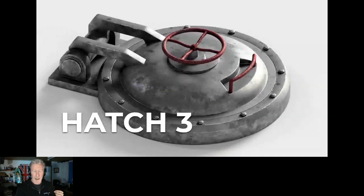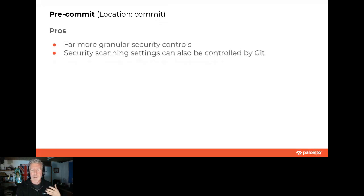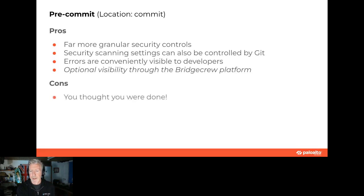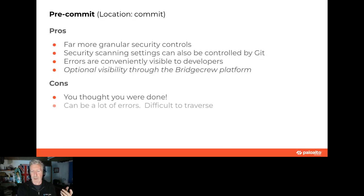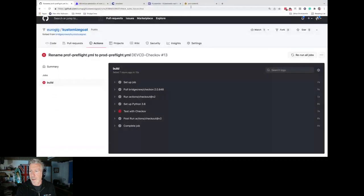Hatch three — pre-commit. If you're not familiar with pre-commit, the pros: you get the same security controls as before, errors are visible to developers, you don't need API keys or the Bridgecrew platform — Checkov is free. The cons: you thought you were done. Pre-commit implies you waited until the end to commit, so if you did a lot of work there could be a lot of errors all at once.